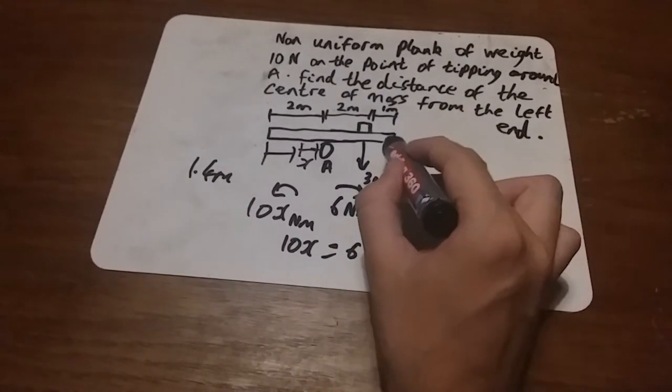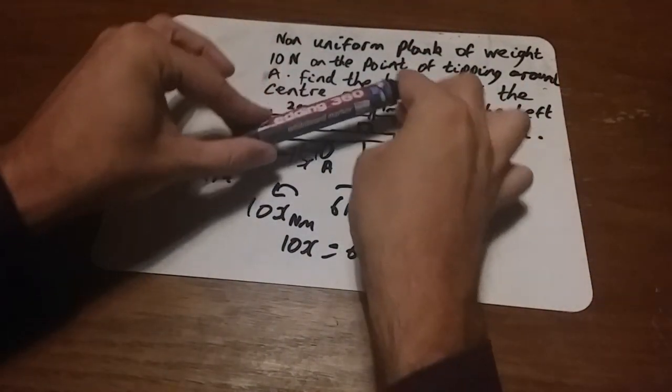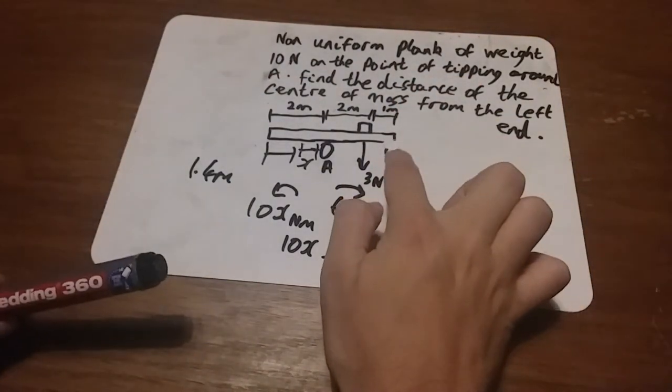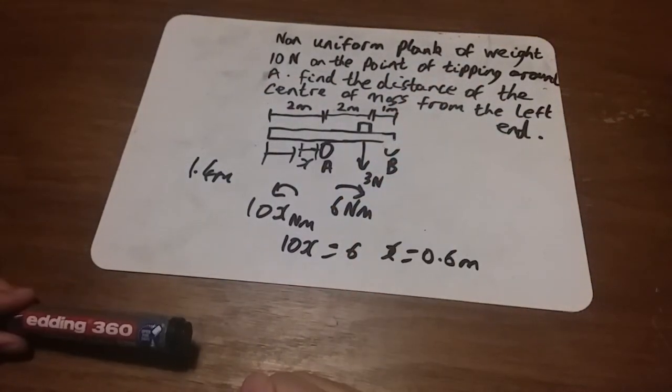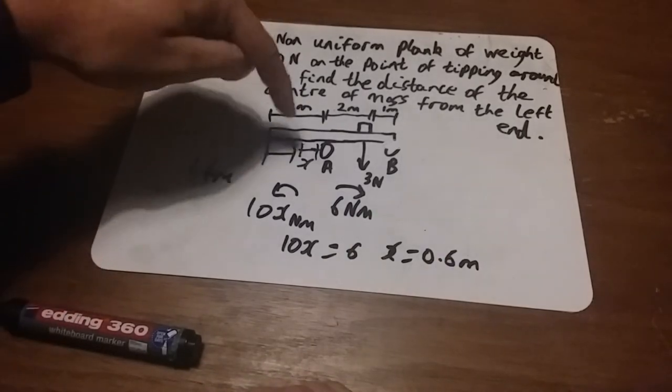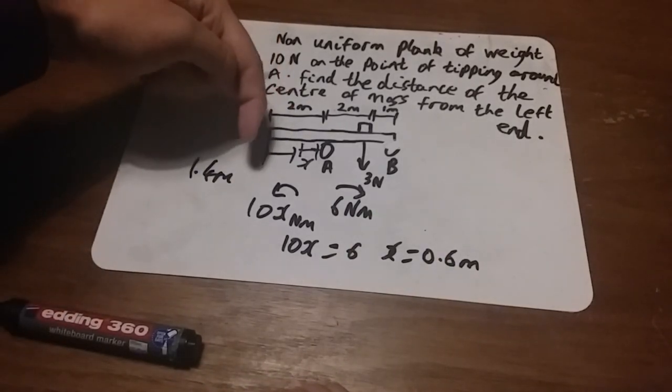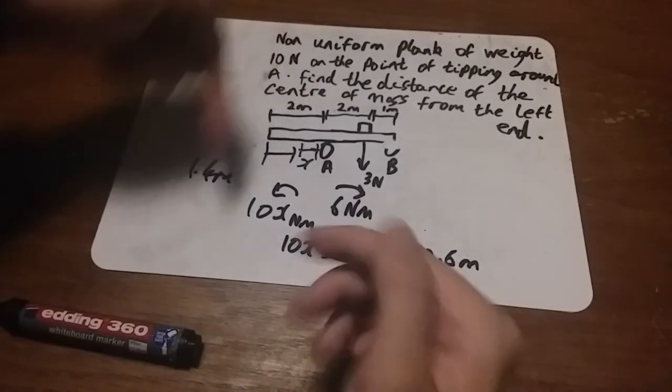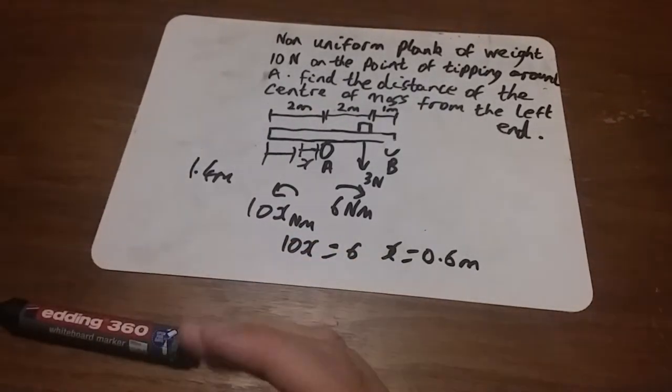The important thing here was, because it's just on the point of tipping, this is no longer supplying any force up to it. You can think of it like it's in equilibrium. If we'd put a single bit of extra force going down here, like an extra weight on it, then it would have tipped. But because it's just on the point of tipping, it's in equilibrium. It's not quite going.